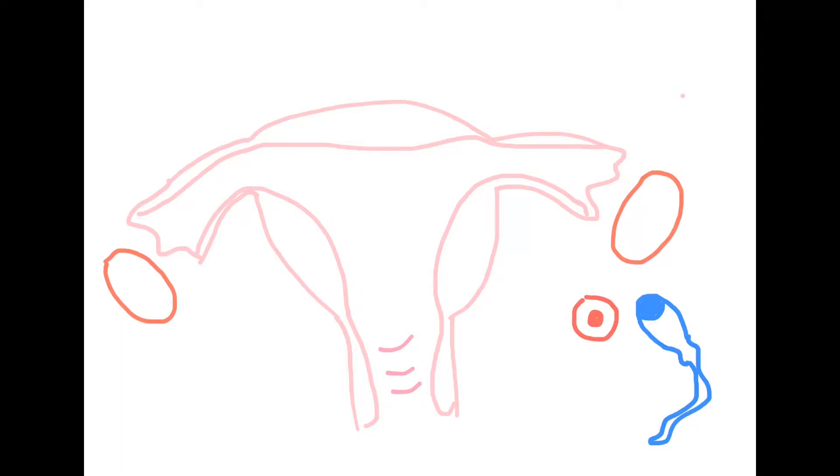Hello, today we will be discussing the hormones of pregnancy. Here I have a uterus. We will be discussing the hormones and here we have a uterus, we have the ovary, and this represent our ova and this is our sperm.